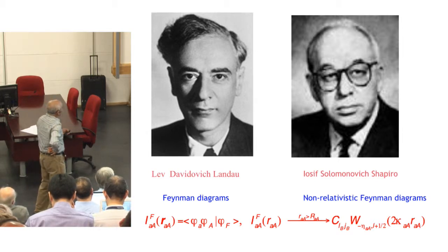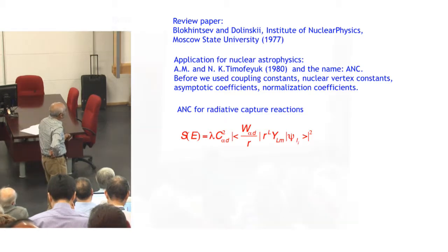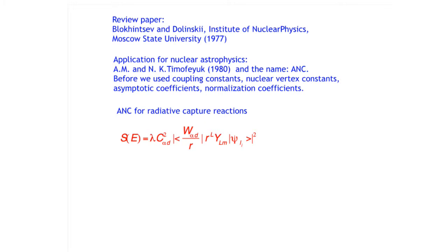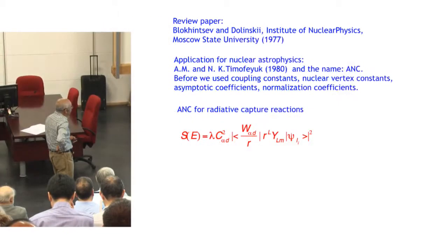The first review paper was published at Moscow State University in 1977 by my micro-advisors Blokhintsev and Dolinsky. Application of the ANC method for nuclear astrophysics was suggested by me and Natasha Timofeyuk in 1990. When I moved to the Cyclotron Institute in 1994, I gave it the name ANC, Asymptotic Normalization Coefficient, which is now in PACS and used everywhere. Before, we used coupling constant, nuclear vertex constant, asymptotic coefficient, or normalization coefficient.